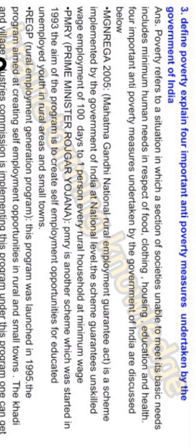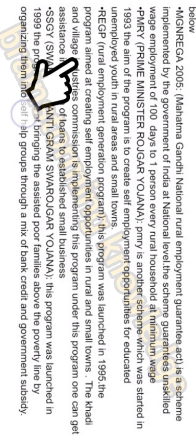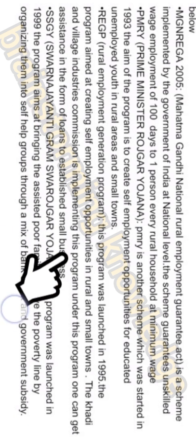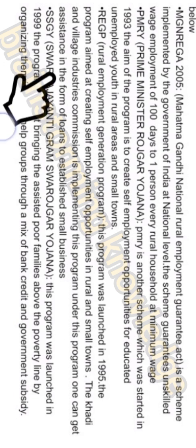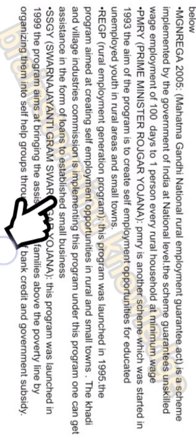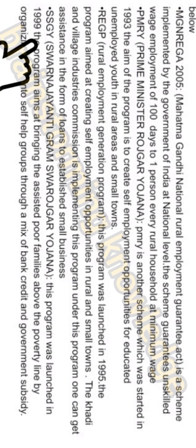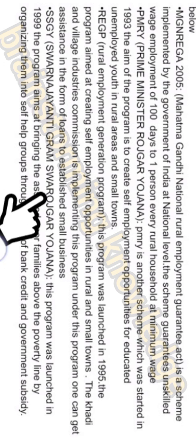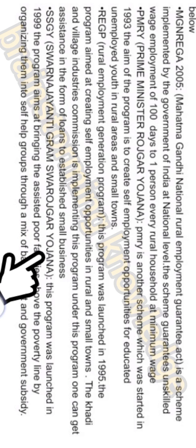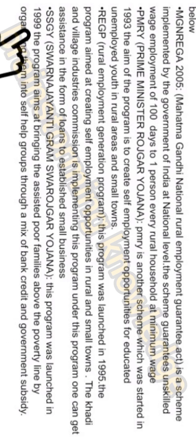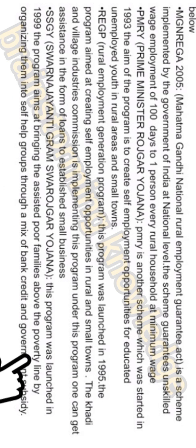Third, REGP (Rural Employment Generation Program), launched in 1995, aimed at creating self-employment opportunities in rural areas and small towns. The Khadi and Village Industries Commission implements this program, providing loan assistance to establish small businesses. Fourth, SGSY (Swarna Jayanti Gram Swarozgar Yojana), launched in 1999, aims at bringing assisted poor families above the poverty line by organizing them into self-help groups through a mix of bank credit and government subsidy.